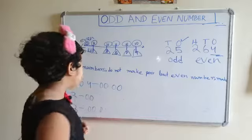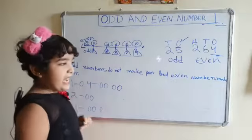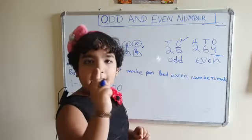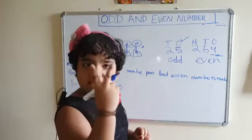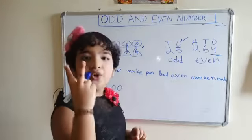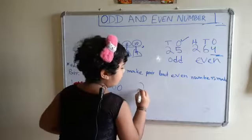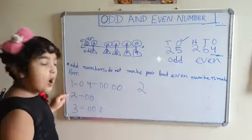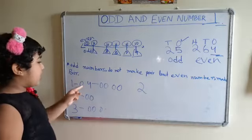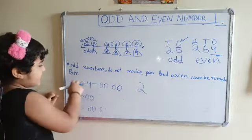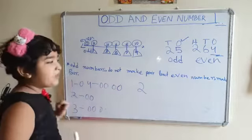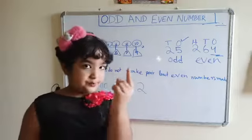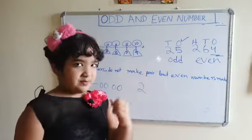कैसे? आयो देखते हैं. पहले मैं आपको बता दू — एक pair में minimum two things होते हैं. कितने? Two things. तो यहां हमने one लिया. तो यहां एक one है, मतलब एक thing है. तो मैंने बताया कि एक pair में two things minimum होते हैं.